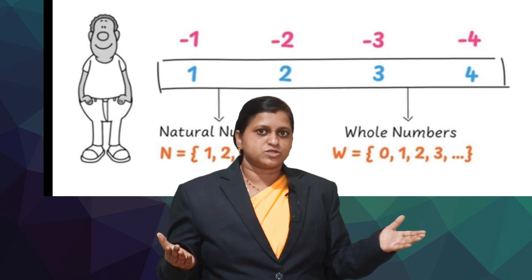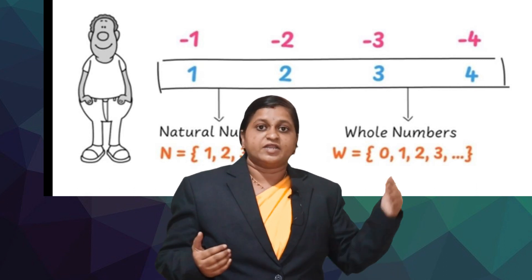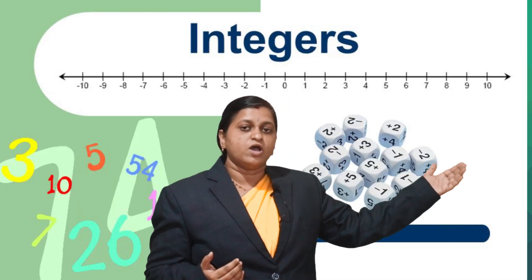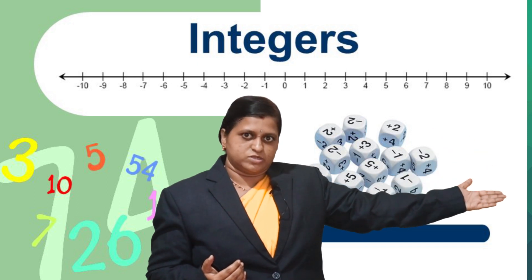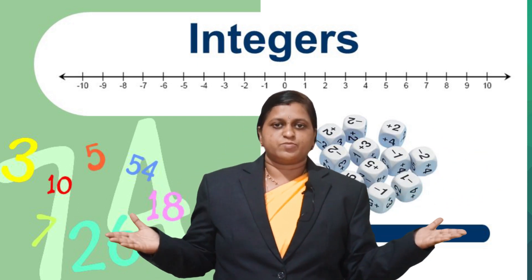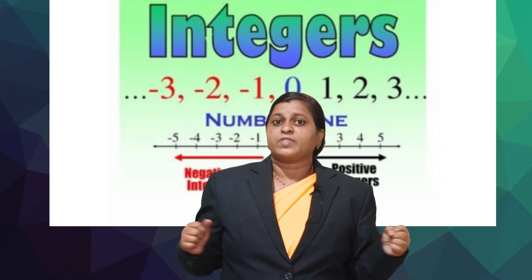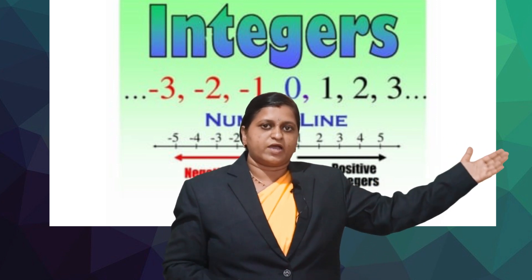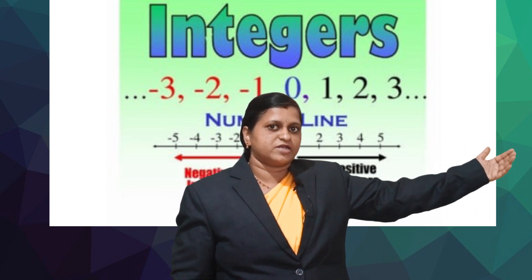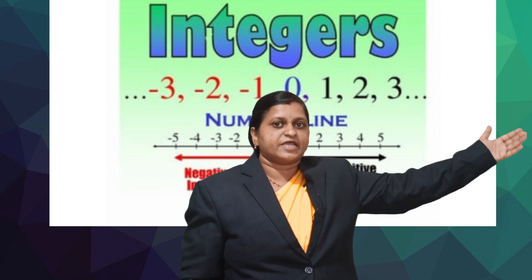So, the integers are the collection of natural numbers, zero and negative numbers. Integers are denoted by the letter Z. In fact, minus one, minus two, minus three, minus four and so on are negative integers.